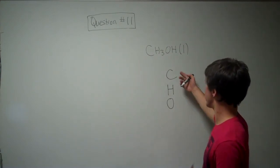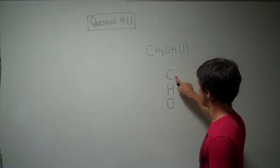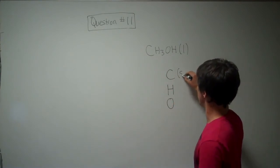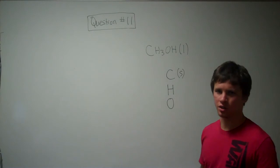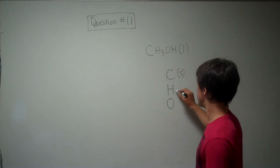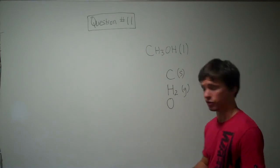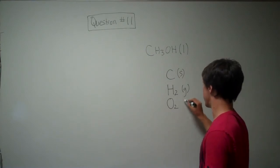So carbon is found by itself, one atom at a time in nature, and it's a solid. Hydrogen, you don't really find by itself. It's a gas, and it's actually paired with another hydrogen. So you find it like this in nature. And same thing with oxygen, it's a diatomic gas.